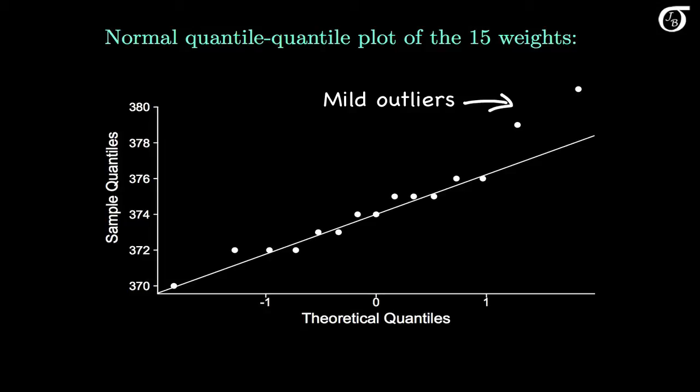Is it still valid to use procedures based on a normally distributed population? Well, the sample variance is quite sensitive to extreme values, and it's always a little sketchy to use these inference procedures for variances, as they rely so heavily on the normality assumption. But we're not ever going to get a perfect normal quantile-quantile plot, even if we're sampling from a normally distributed population. I don't think this plot is too bad, so I'd say yes, it's okay to use these procedures — if we bear in mind that it's always a little bit dubious, and we shouldn't put too much faith in the results.